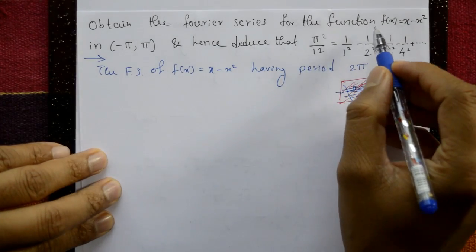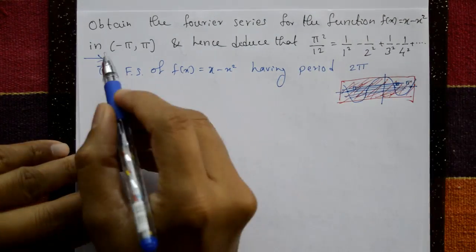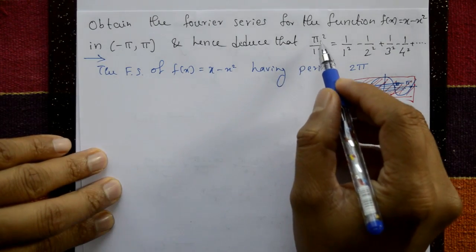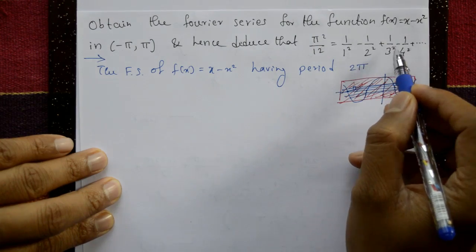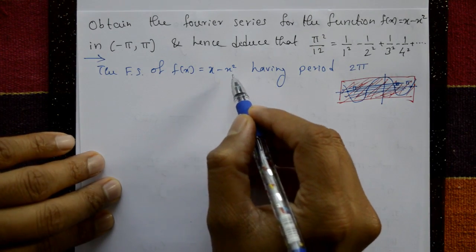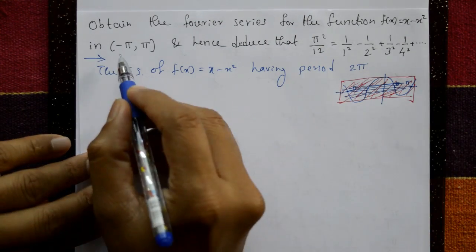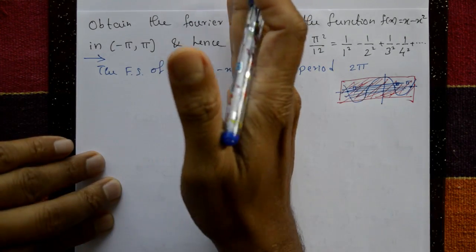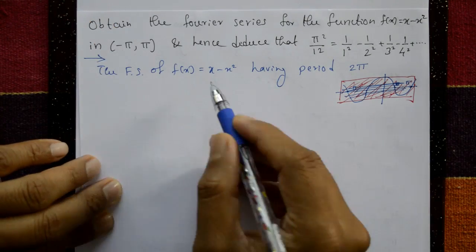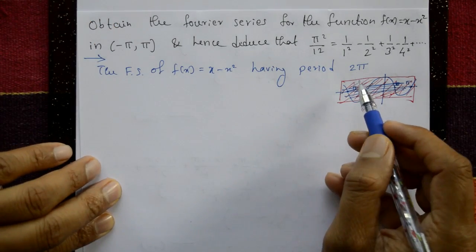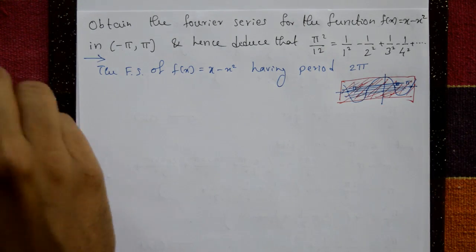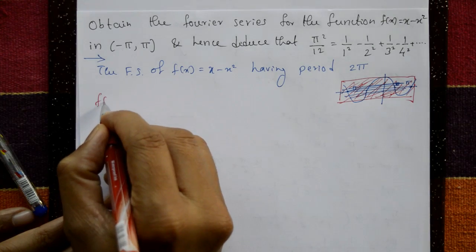Obtain the Fourier series for the function f(x) = x - x² in the interval [-π, +π], and hence deduce that π²/12 equals the given series. The Fourier series of f(x) = x - x² has period 2π, covering the interval from -π to +π — one full circle period of 360 degrees.